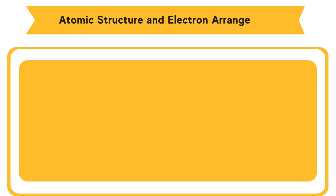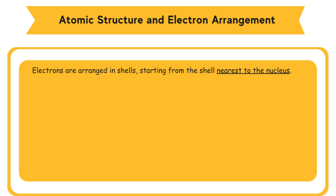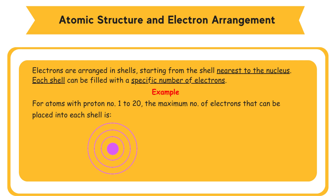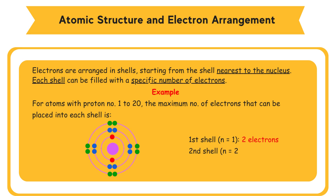Atomic structure and electron arrangement: electrons are arranged in shells starting from the shell nearest to the nucleus. Each shell can be filled with a specific number of electrons. For atoms with proton numbers 1 to 20: the first shell (n=1) holds a maximum of 2 electrons, the second shell (n=2) holds 8 electrons, and the third shell (n=3) holds 8 electrons.